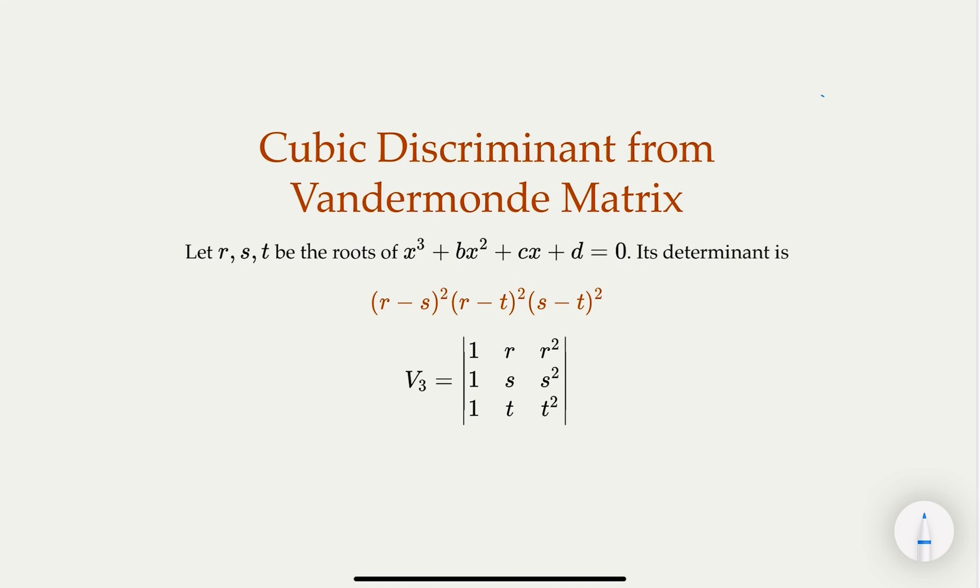Today we're going to look at cubic discriminant and how we can calculate it from Vandermonde matrix. In our previous lecture we talked about the discriminant, which is useful because if the value is zero it means some roots are equal to each other.